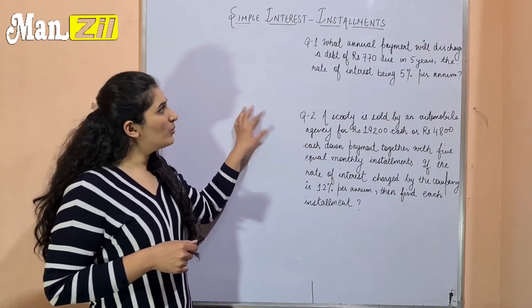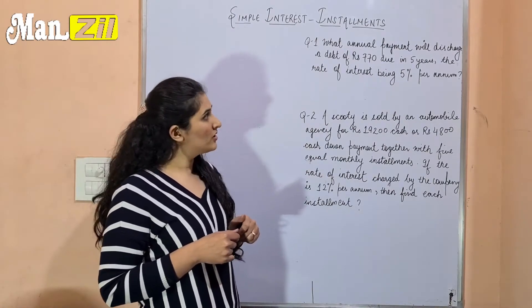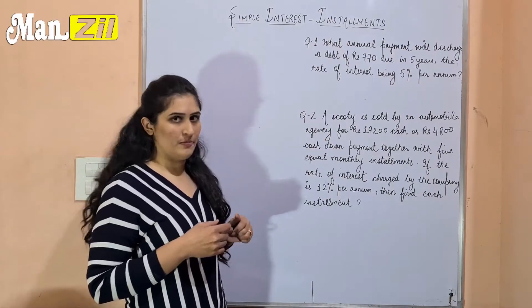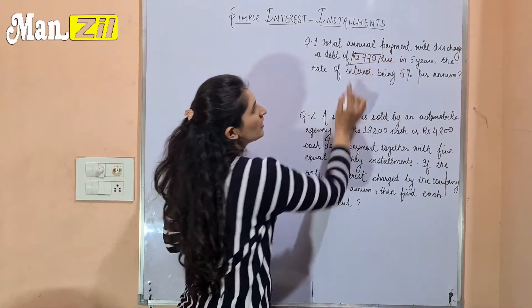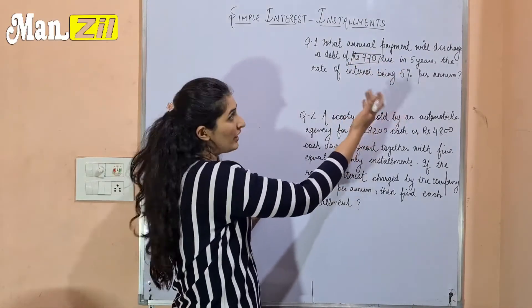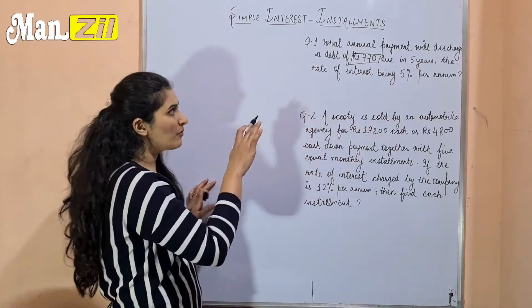What annual payment will discharge a debt of Rs. 770 due in 5 years, the rate of interest being 5% per annum? So here we are told that we have to give this debt due in 5 years, which means 5 installments, and rate of interest is 5% per annum.